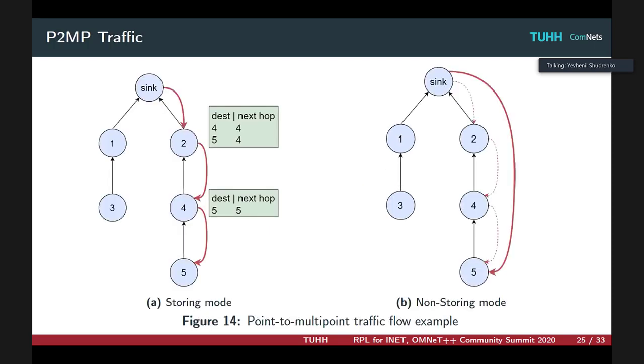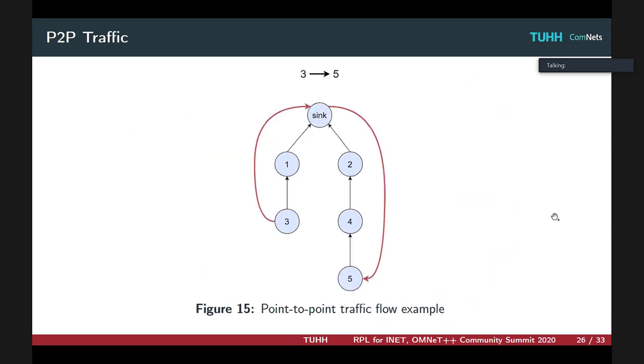These are examples of typical point-to-point traffic which can occur either hop-by-hop by using hop-by-hop routing in storing mode, or by using a source-routed header in non-storing mode where the sink has to explicitly tell on each hop where to forward the packet. The point-to-point traffic works in a similar manner as point-to-multipoint traffic and also requires, as I already mentioned, some common ancestor to forward the packet downwards.